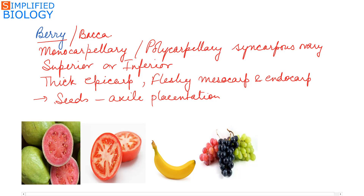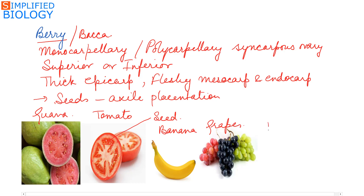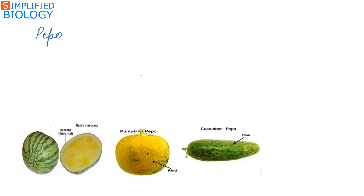When young, the seeds remain attached to the placenta, but upon maturity they get separated from it. Examples of bacca or berry include guava, which has an inferior ovary; tomato, which has a superior ovary; banana; grapes; and brinjal. The edible part is all parts of the fruit — epicarp, mesocarp, endocarp, and even the seeds.